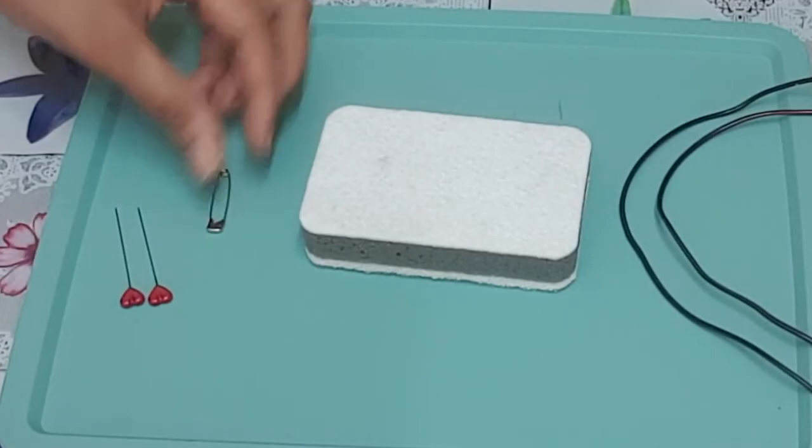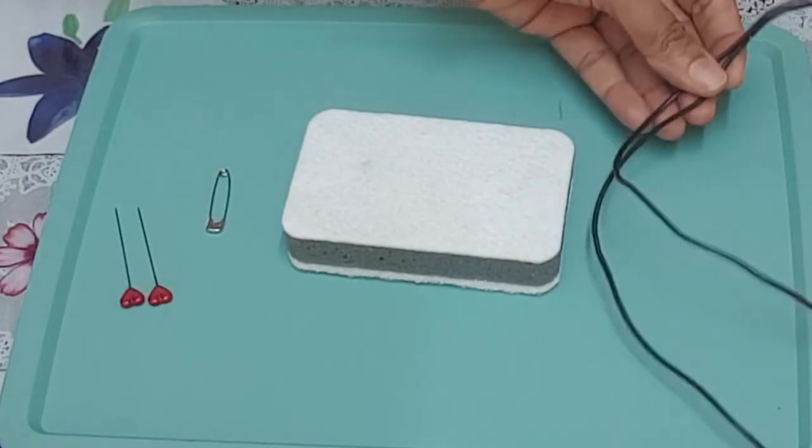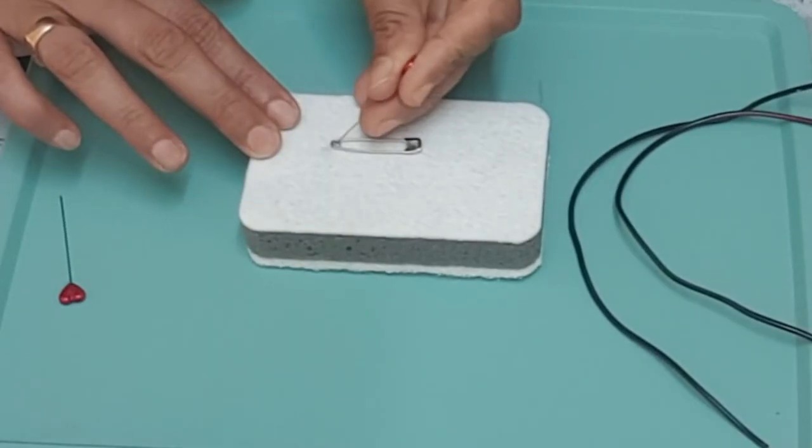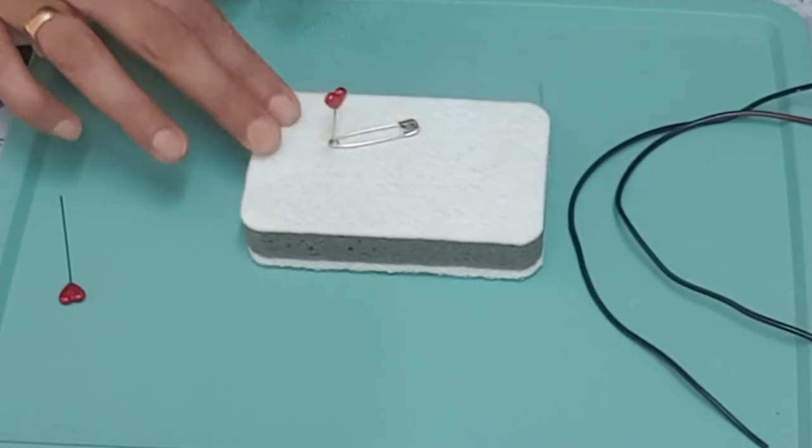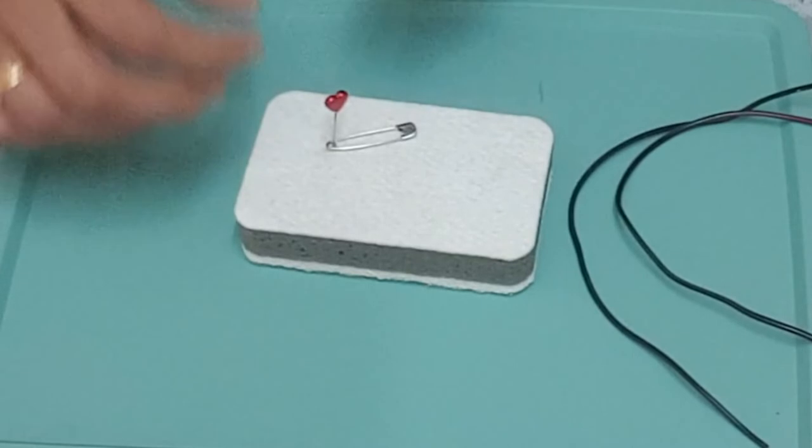Insert a drawing pin into the ring at one end of the safety pin and fix it on the thermocol sheet. Make sure that the safety pin can be rotated freely.